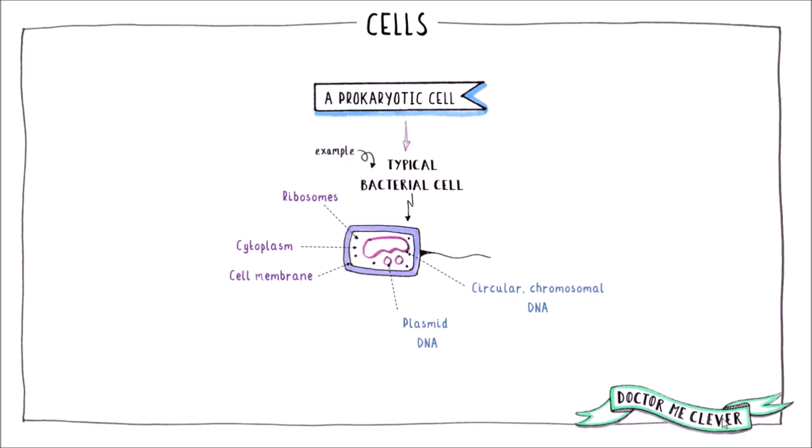Plasmid DNA, small loops of DNA that can be passed between bacterial cells. They contain extra information such as antibiotic resistance genes.